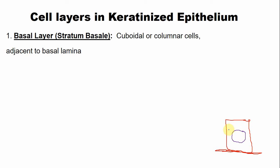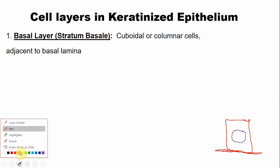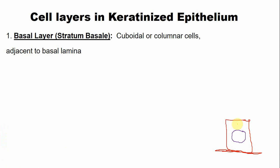The cells in the basal layer contain all the organelles present in a normal cell, like mitochondria, Golgi apparatus, and endoplasmic reticulum. These cells also contain bundles of tonofibrils. Most of the cell division occurs in the basal layer — it is a few cell layers thick.